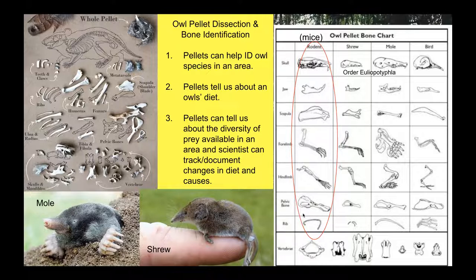Owl pellet dissections are important for scientists because they can help identify owl species in an area, tell us what owls have been eating, give us a good idea of what prey animals are in the area, and document changes in diet over time. If you're not part of Dallas ISD, you can go to carolinabiological.com to order owl pellets. Now Mr. Monroe is going to talk to us all about energy pyramids.